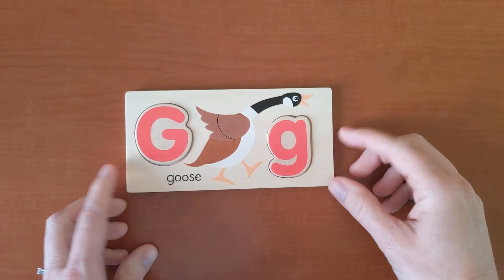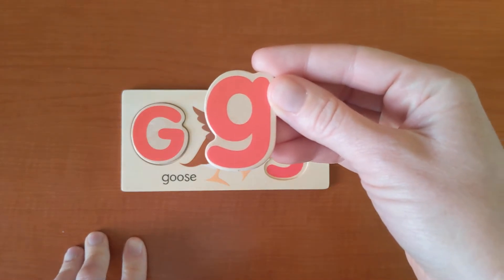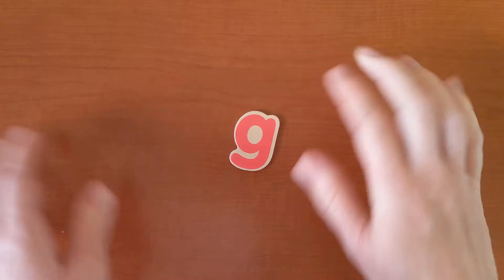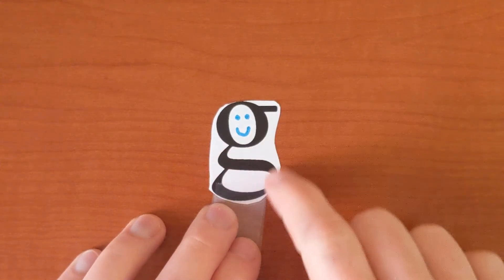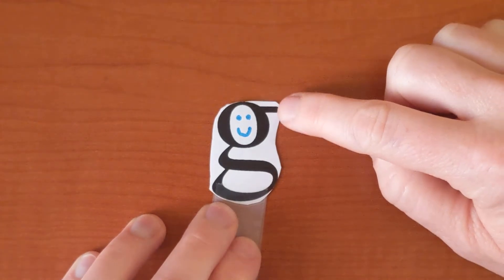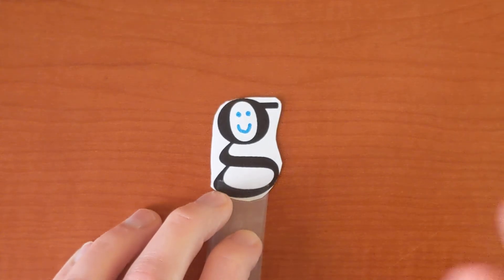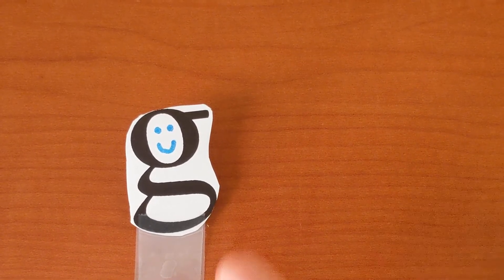G says g like goose. Now, I'm not sure if you know, but sometimes lowercase g likes to be fancy. Sometimes letter G likes to get all dressed up in her fancy dress and sometimes she even wears a little bow in her hair. You see that? Like she's going to a party or something. Sometimes letter G likes to be fancy.